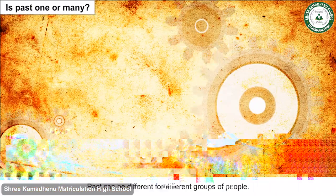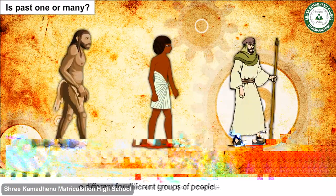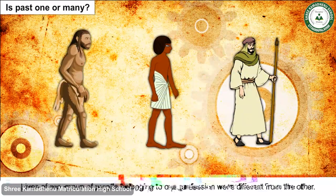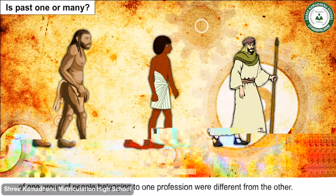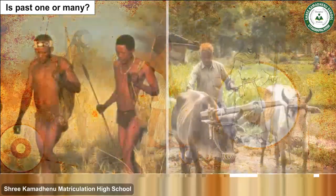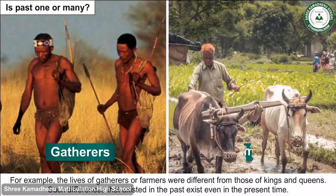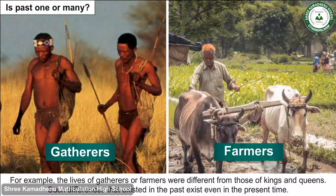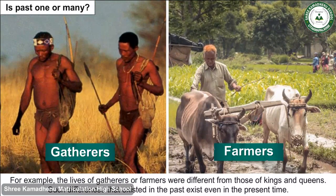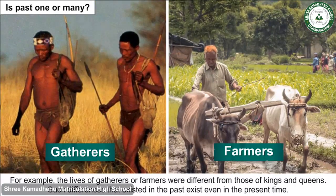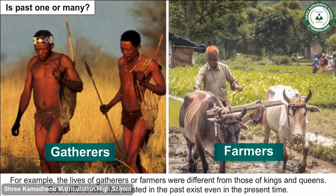The past can be different for different groups of people. The lives of one group of people belonging to one profession were different from another. For example, the lives of gatherers or farmers were different from those of kings and queens. Such differences that existed in the past exist even in the present time.